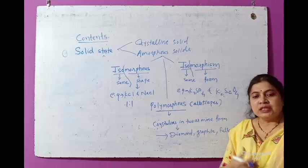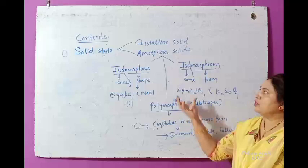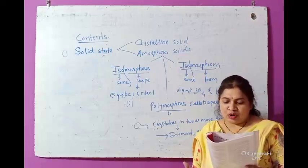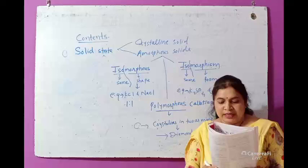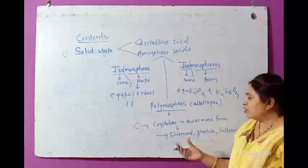Allotropes include carbon — allotropes graphite and diamond. When a single substance crystallizes into two or more forms under different conditions, that is called polymorphism or allotropy. These forms are called allotropes of each other.